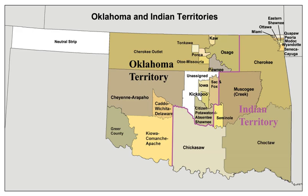The Five Civilized Tribes established tribal capitals in the following towns: Cherokee Nation – Tahlequah; Chickasaw Nation – Tishomingo; Choctaw Nation – Tuskehoma (later moved to Durant); Creek Nation – Oakmulgee; Seminole Nation – Wewoka. These tribes founded towns such as Tulsa, Ardmore, and Muscogee, which became some of the larger towns in the state. They also brought their African slaves to Oklahoma, which added to the Black American population in the state.